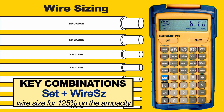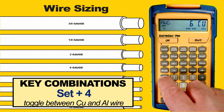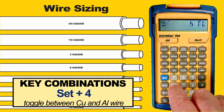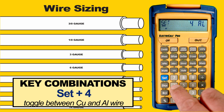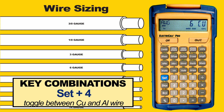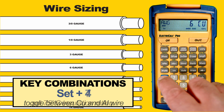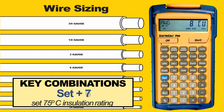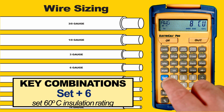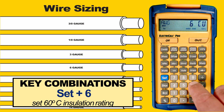We can also change the wire type. Press Set to select the second function of the next key we press, then press 4. We see that the function is a toggle between copper wire and aluminum wire — let's set this back to copper wire. We can also change out of the default 60°C insulation rating by pressing Set for the second function, then 7 for 75°C, Set then 6 for 60°C, or Set then 9 for 90°C.